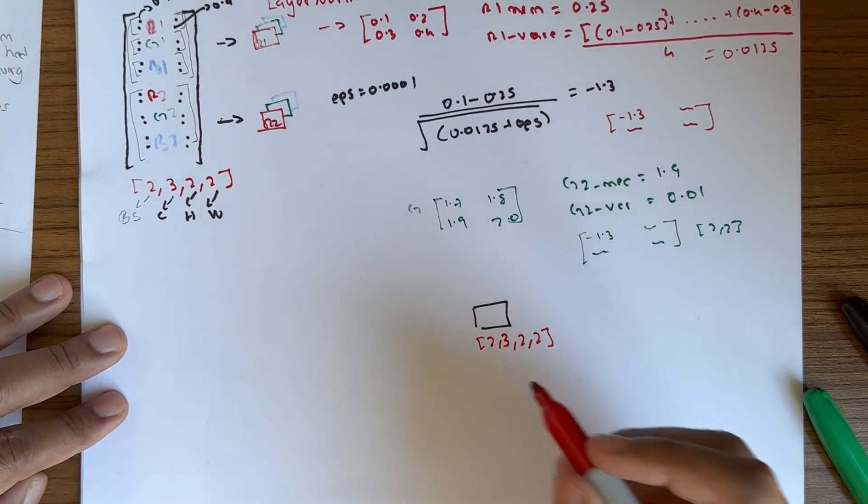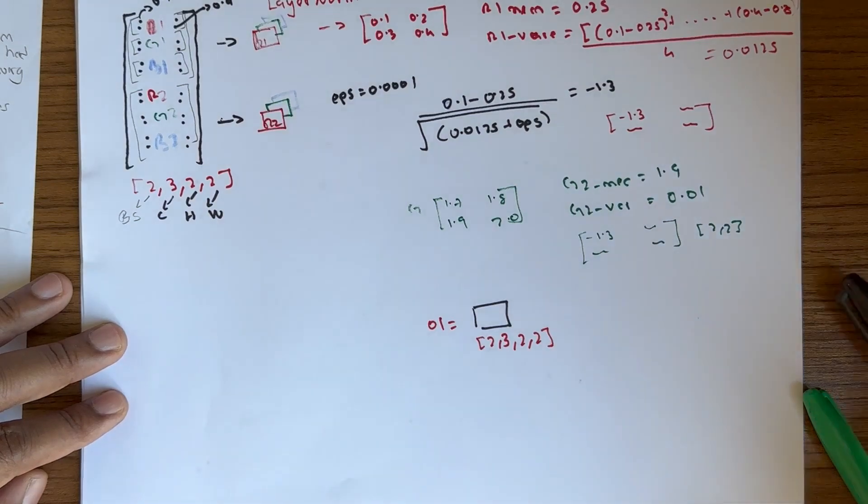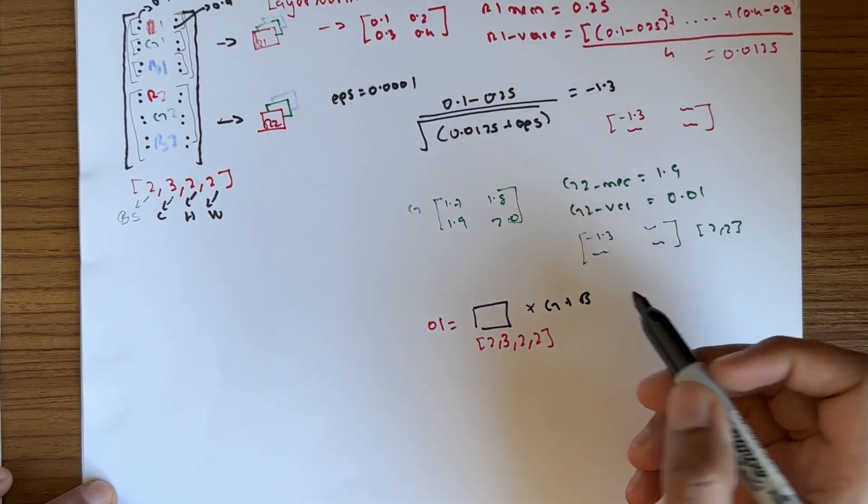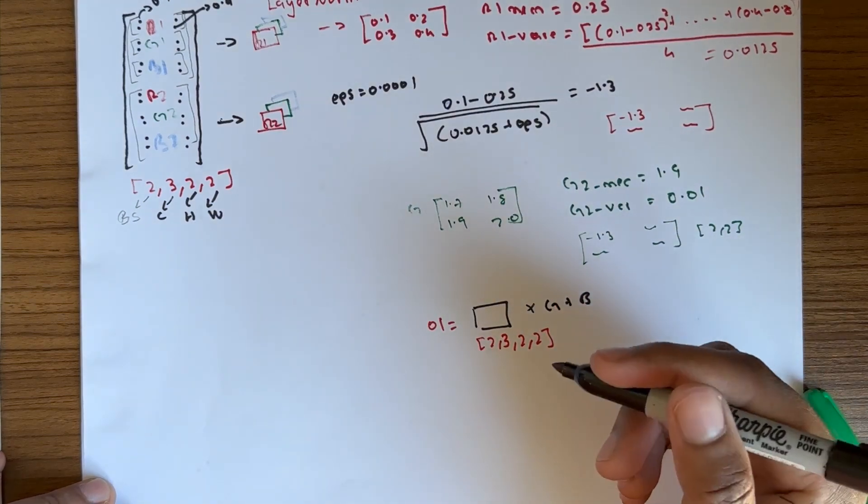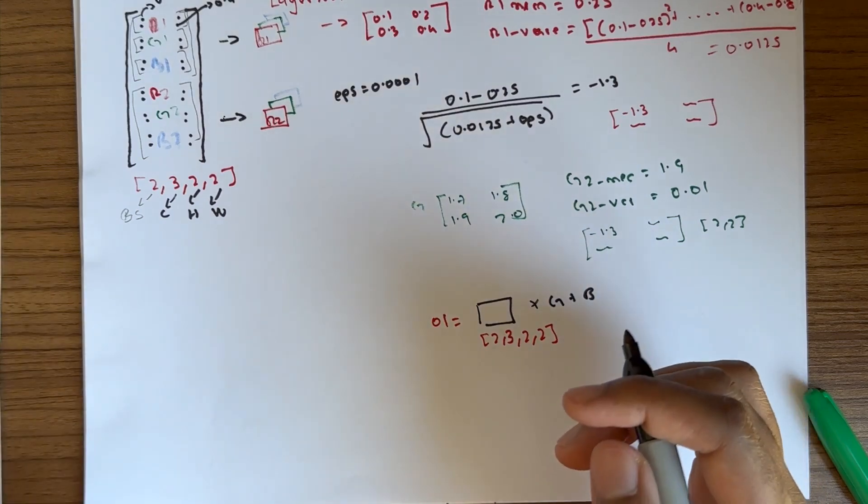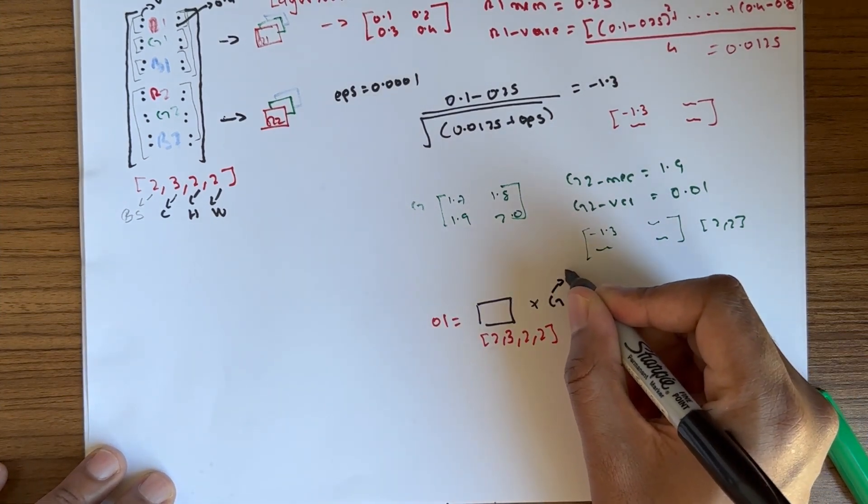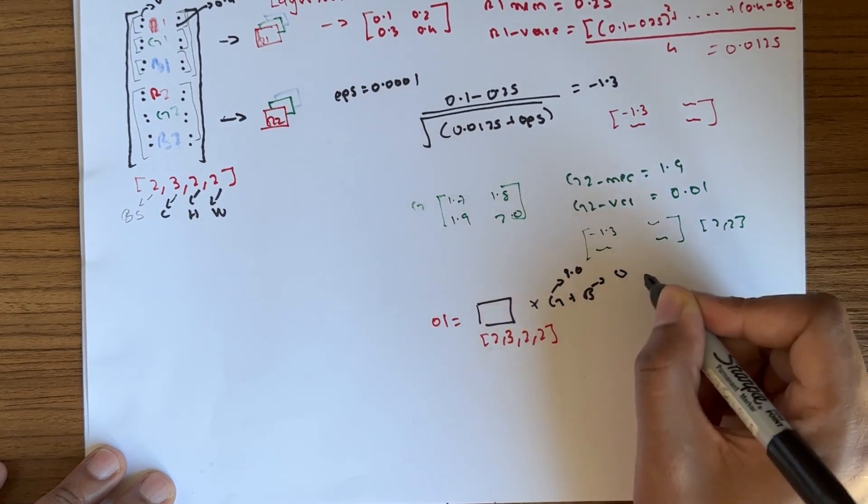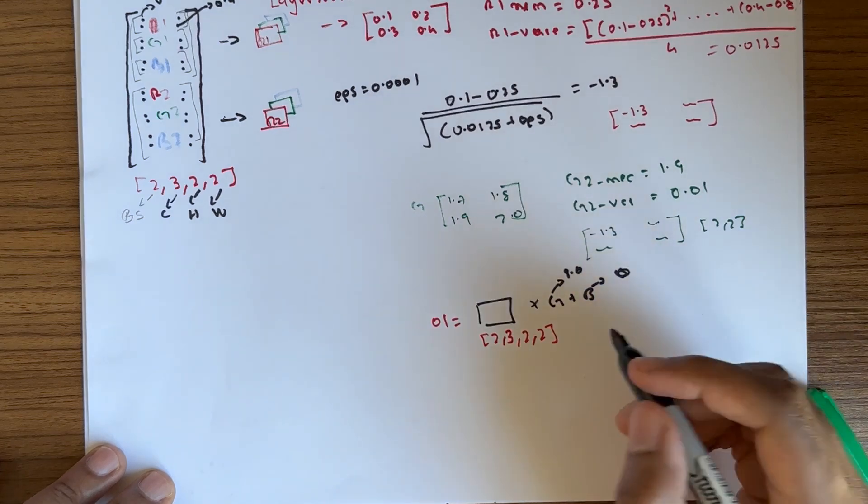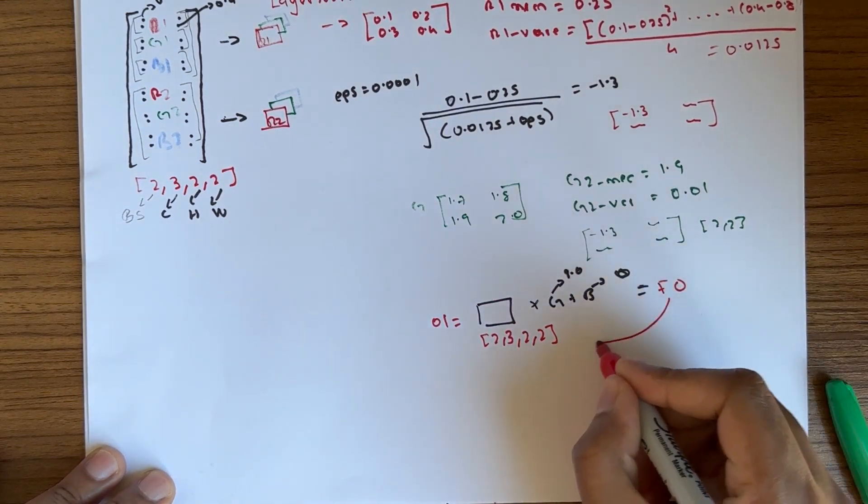But that's not all. Let's call this output O1. What we need to do next is multiply by gamma plus beta. These are trainable parameters used for scaling and shifting. When we normalize, we end up with unit variance. However, data with unit variance can constrain the network, making it difficult to learn complex transformations. Initially gamma is 1.0 and beta is zero. These trainable parameters are updated using gradient descent. The final output has the same dimension as before.